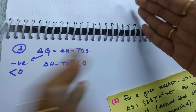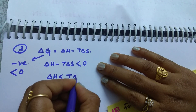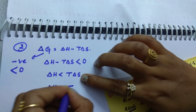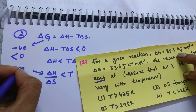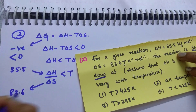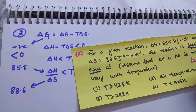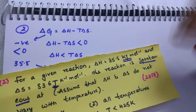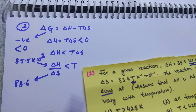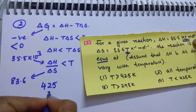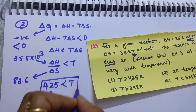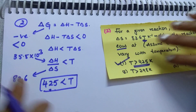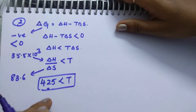From delta H minus T delta S less than 0, we get delta H less than T delta S, so delta H by delta S is less than T. Delta H is 35.5 kJ and delta S is 83.6 J. You must convert units — 1 kilojoule equals 10³ joules — otherwise you will get the wrong answer. After conversion you get approximately 425, so T must be greater than 425 K for the reaction to be spontaneous.